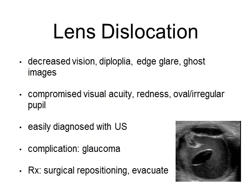Lens dislocation can happen in conjunction with globe rupture, but it also can happen on its own. It's also known as ectopia lentis and is often due to trauma, though it can also be congenital and associated with Marfan's syndrome. Symptoms include decreased vision, diplopia, edge glare, and ghost images. On exam, patients might have compromised visual acuity, some redness, and an irregular pupil. This condition is very easily diagnosed with ultrasound — the lens is essentially swimming around in the vitreous humor. The complication of this condition is glaucoma, and treatment is surgical repositioning most of the time, so these patients need to be evacuated.